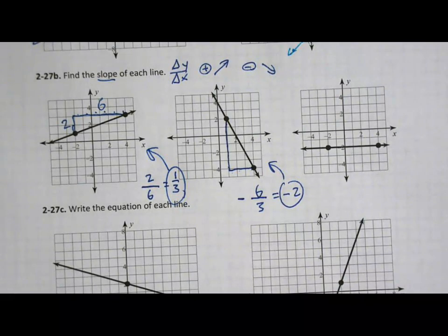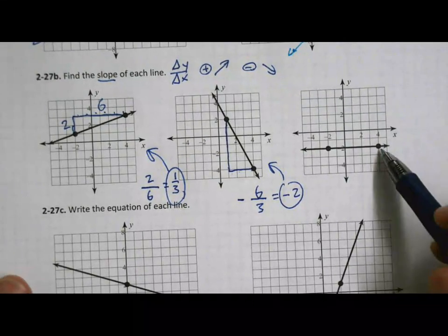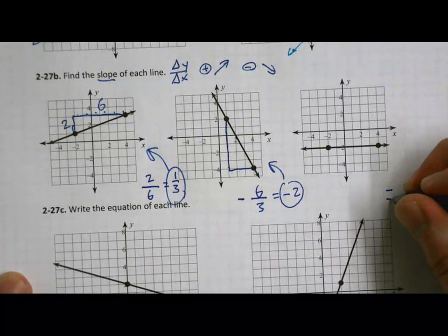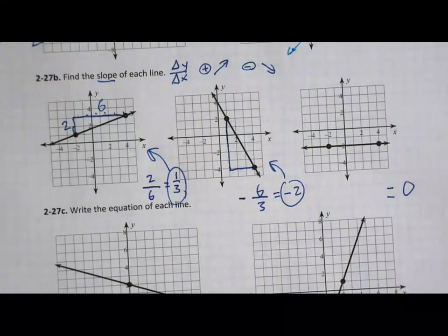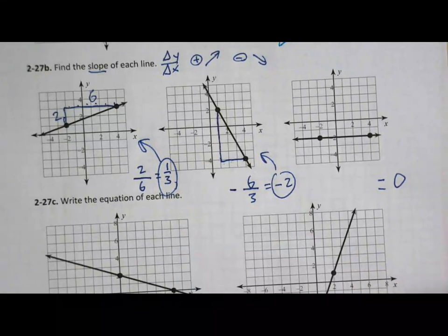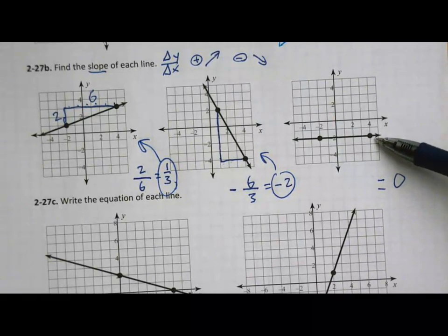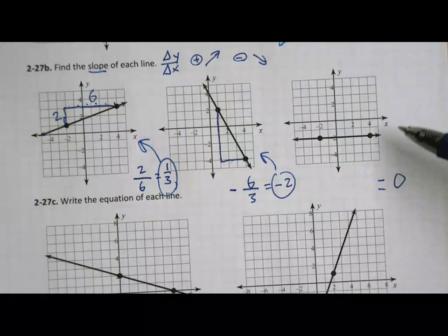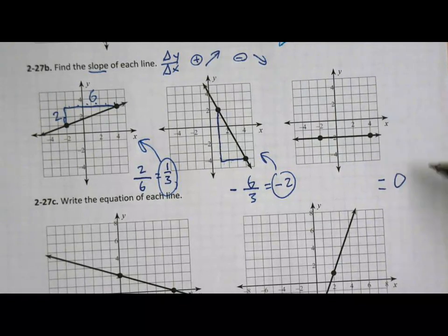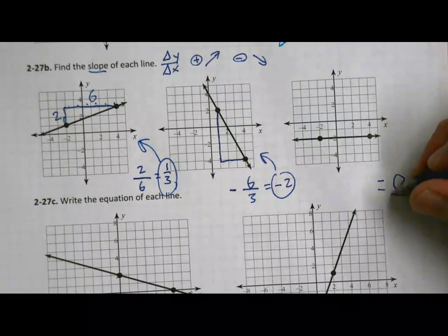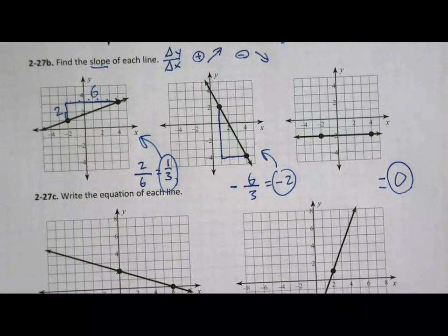Our last line in this set is a flat line. Do you remember what's special about the slope of a flat line? The slope of a flat line is zero. That's interesting — does a flat line have a positive or negative slope? Well, is zero positive or negative? The answer is neither. Zero is the only number that's not positive or negative — it's its own thing.